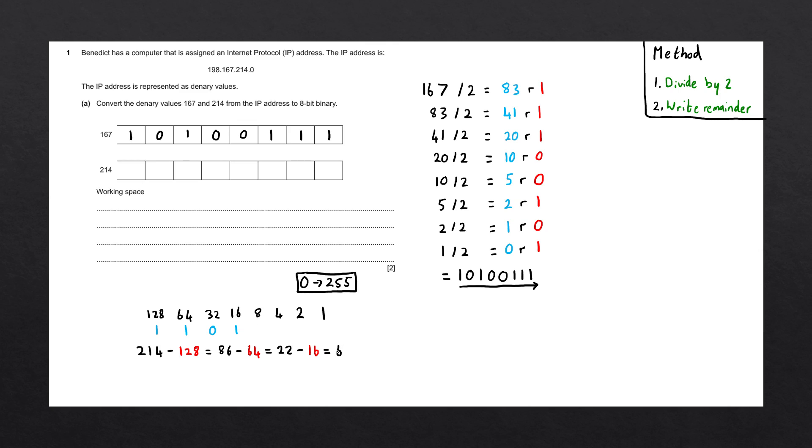Eight does not go into six. So we're going to write zero underneath eight. Four does go into six. So we're going to subtract four from six. And we're going to write a one underneath four. The result of this is going to be two. Two does go into two. So we're going to subtract two from two. And we're going to write a one underneath two. The result of this is now zero. One does not go into zero. So we're going to put a zero underneath the one.